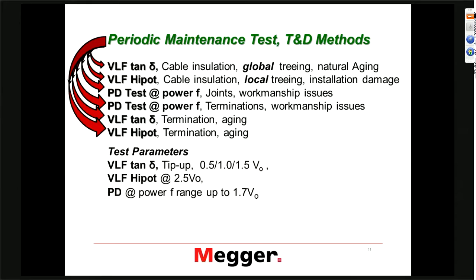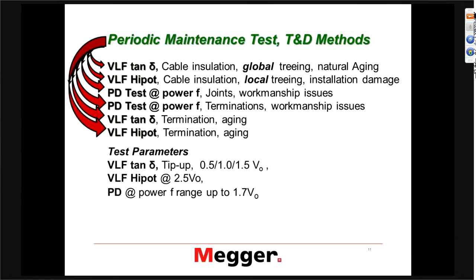By doing a partial discharge test, we can see whether joints or terminations have any workmanship issues, because there is a very simple rule: a brand new splice or termination should have zero PD — as carried out as a field measurement. We're not talking about factory testing here. We have to do these acceptance tests and periodic maintenance tests as field tests, which is a very different environment than what manufacturers can do in their plants.